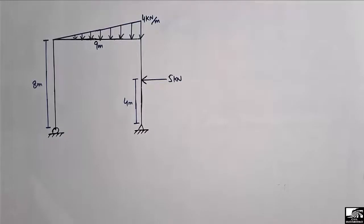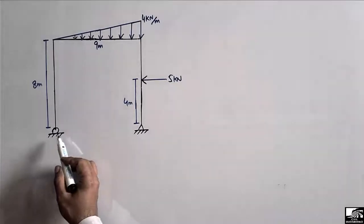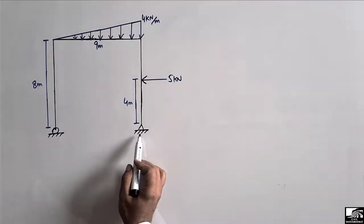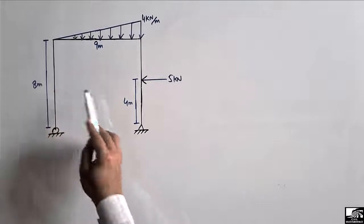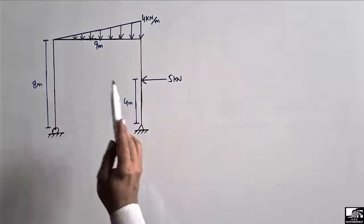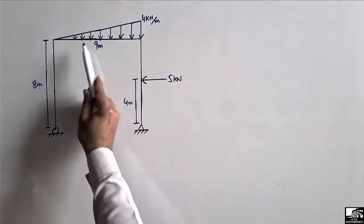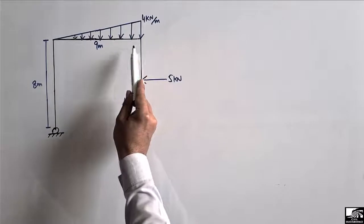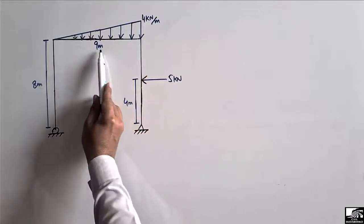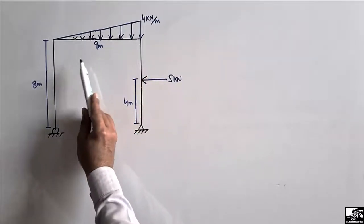Hello guys, welcome back to the Civil Engineering YouTube channel. Please subscribe our channel for digital engineering videos. Today our lecture is to find out the support reactions for this frame. This frame consists of one beam and two columns. There is a uniformly varying load, or triangular load, acting on the beam. The beam length is 9 meters.